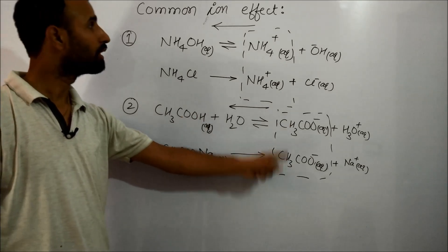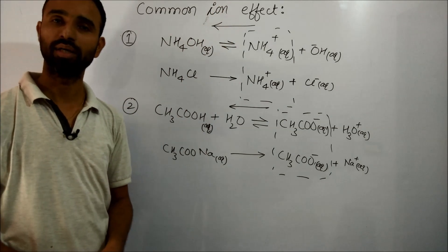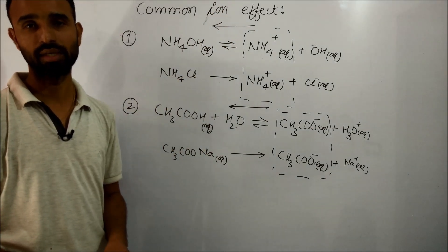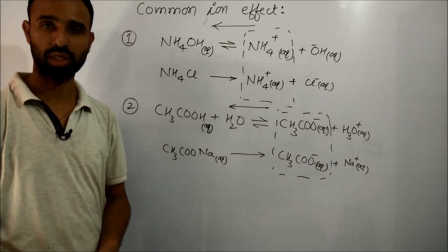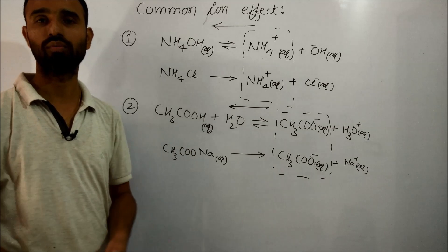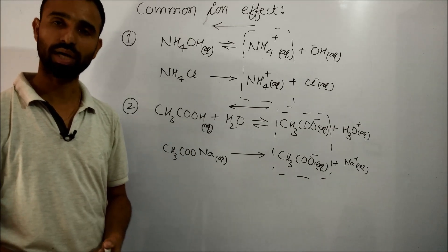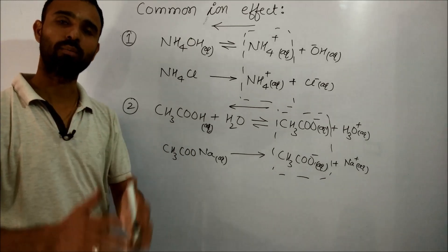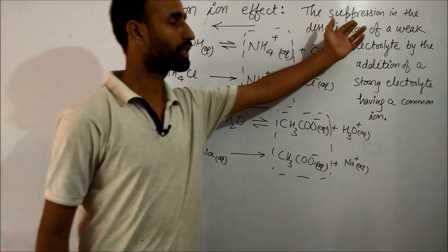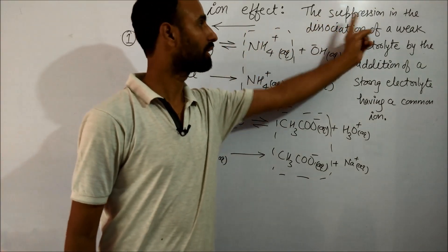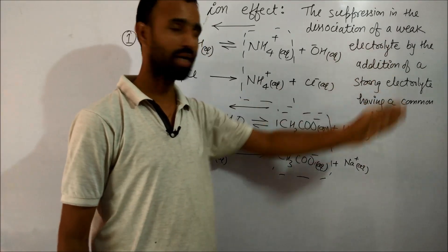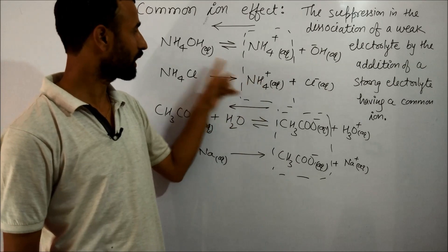This is called common ion effect. To define it, it is defined as suppression in dissociation of weak electrolyte due to the presence of a strong electrolyte having a common ion. Common ion effect is suppression or decrease in the dissociation of a weak electrolyte by the addition of a strong electrolyte having a common ion.